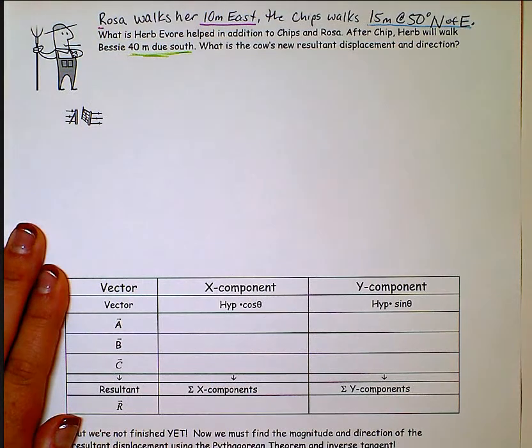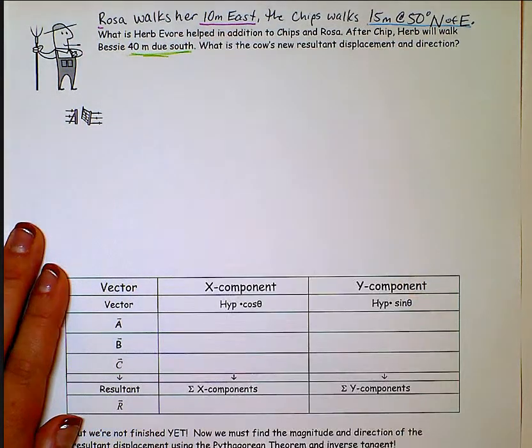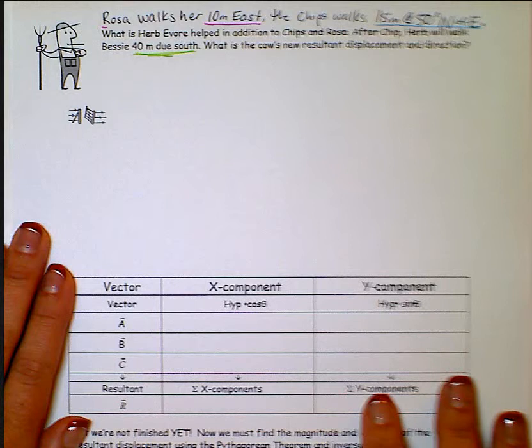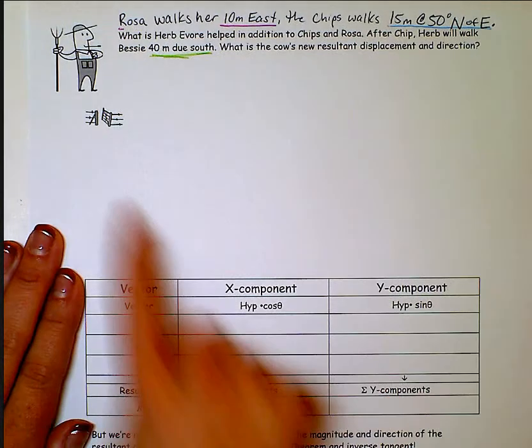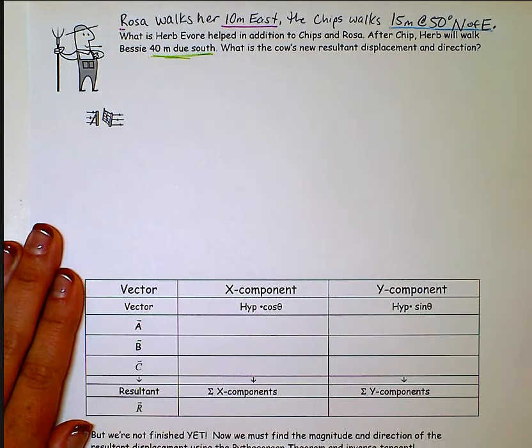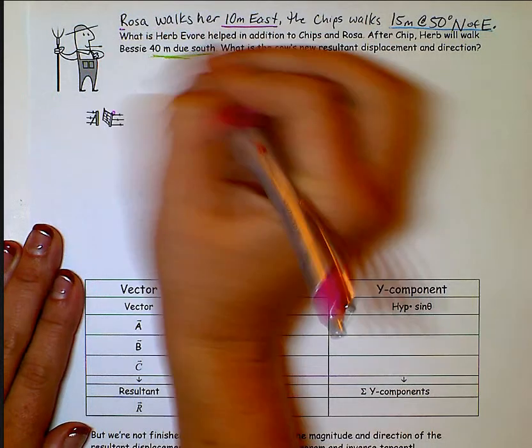So I went ahead and just rewrote this from the page before. We want to start by drawing our vector diagram. I'm going to start here at the corner of the gate and so for the first one it's just 10 meters east.